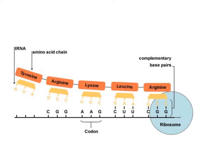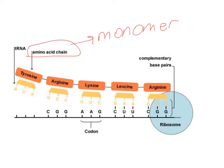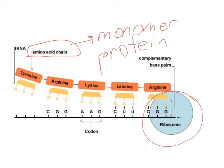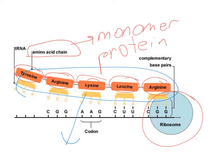When the ribosome is in the cytoplasm, it collects amino acids — the monomers, or building blocks, of protein. These monomers are attached to each other by the ribosome in the cytoplasm, and they are bonded together to synthesize the larger structure we call protein. This is done by the ribosome.